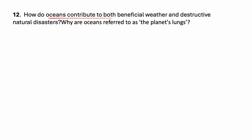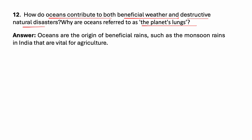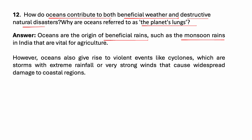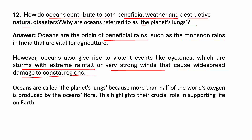How do oceans contribute to both beneficial weather and destructive natural disasters? Oceans are the origin of beneficial monsoon rains — such as monsoon rains in India — that are vital for agriculture. However, oceans also give rise to violent events like cyclones, which are storms with extreme rainfall or very strong winds that cause widespread damage to coastal regions. Oceans are called the planet's lungs because more than half of the world's oxygen is produced by the ocean's flora, highlighting their crucial role in supporting life on earth.